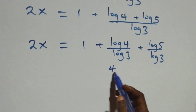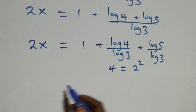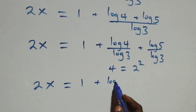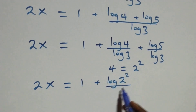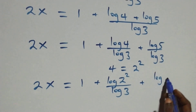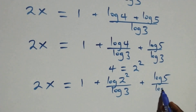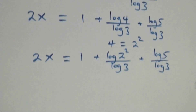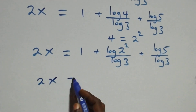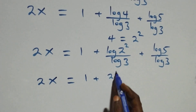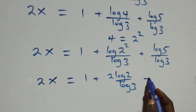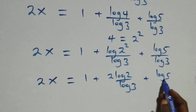Now four can be expressed as two times two, which is two squared. So we have two x equals one plus log of two squared over log three plus log five over log three. Applying the power law of logarithm, the two comes down and this becomes two x equals one plus two log two over log three plus log five over log three.